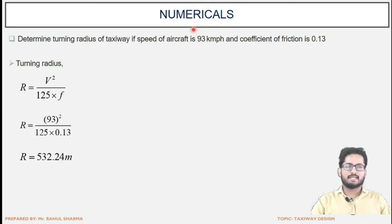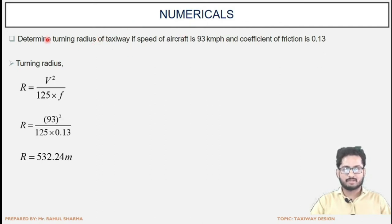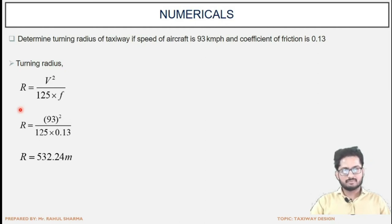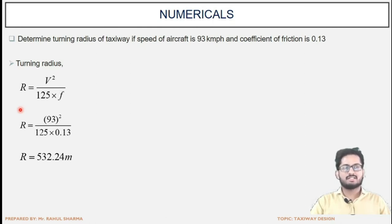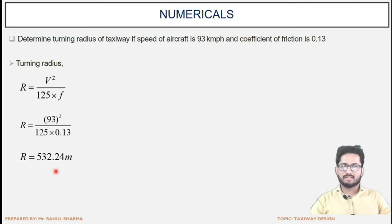The last topic in this chapter is the numerical related to finding the turning radius. Determine the turning radius of a taxiway given: speed of aircraft is 93 km/h and coefficient of friction is 0.13. The turning radius equation, R = V² / (125 × F), has been previously studied. V is 93 km/h and F is 0.13. Substituting the values, we get the turning radius as 502.4 meters. This is a simple 3-mark numerical.